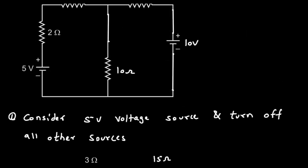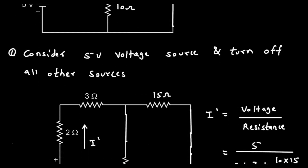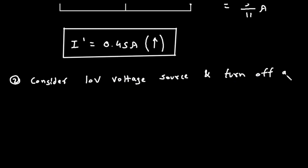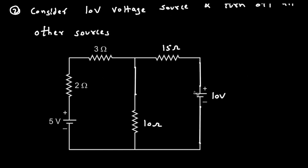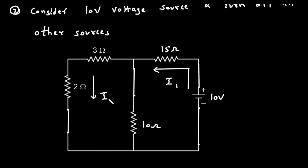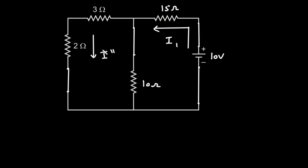Step 2: consider the 10 volt voltage source and turn off all other sources. When we turn off the 5 volt source it is replaced by a short circuit. Now we have to find this current — let's call it I1 flowing through the main loop, and the current through the 2 ohm branch will be called I double prime.